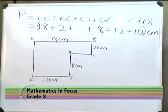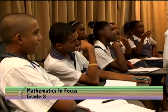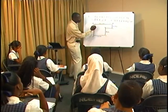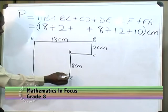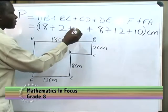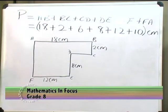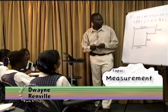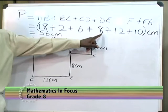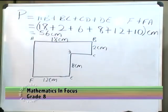Now, what is CD? 6. How did you get 6? You have to teach me. Minus what? 12 from 18 — 12 from 18, correct. Because observe that this full length here is 18, but from F to E is 12. So, it therefore means this remaining distance here will be 18 subtract 12, which is 6. And when we add this all up, what do we get? Someone please add it up: 18 and 2 is 20, and 6 is 26, and 8 is 34, and 12 is 46, and 10 is 56. So, we have the perimeter of this shape here to be 56 centimeters.